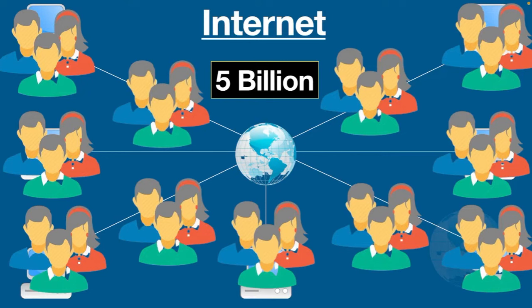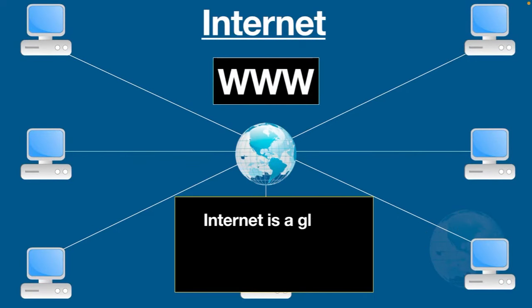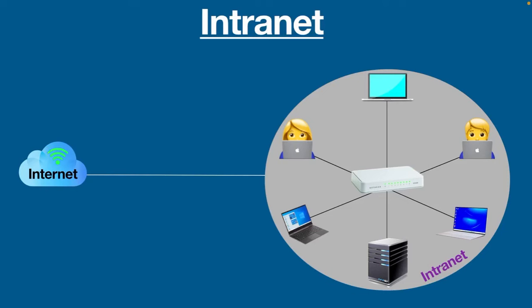Sometimes the internet is mistaken for the World Wide Web, however they are quite different. The internet is a global connection of networks, while the web is a collection of information that can be accessed using the internet. In other words, the internet is the infrastructure, and the web is a service on top of it.